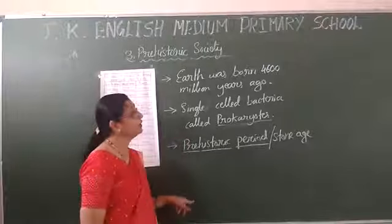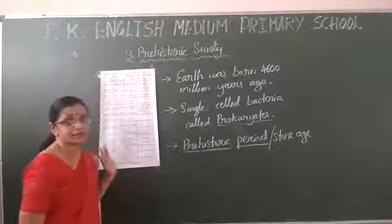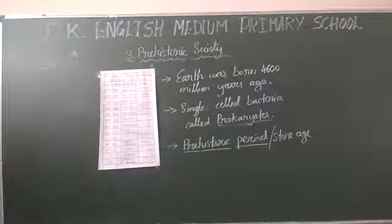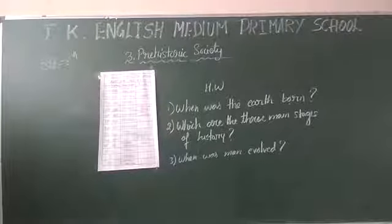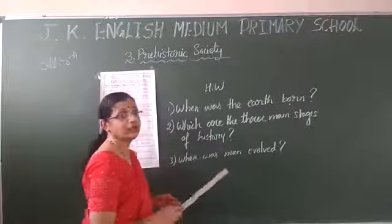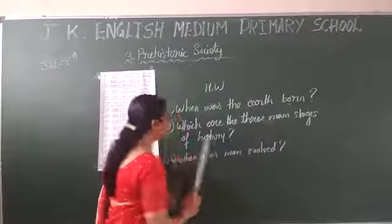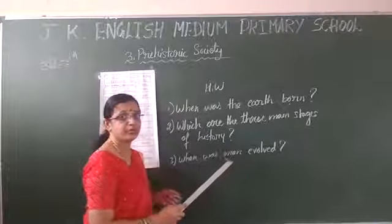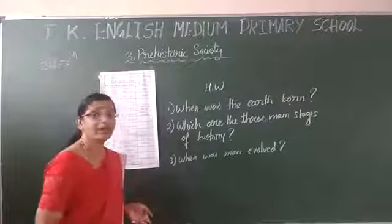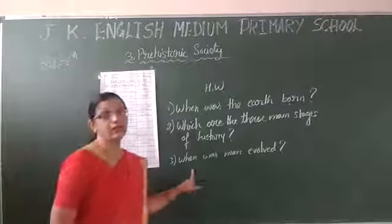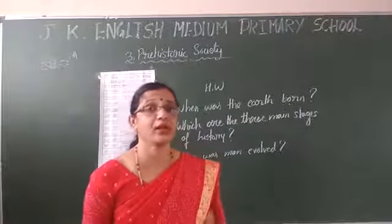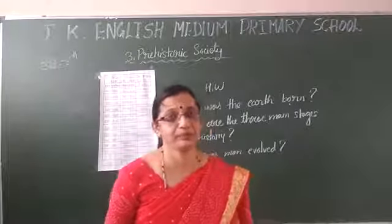For today's session, take down the homework. The questions are: when was the earth born — how many million years ago? Which are the three main stages of history? When was man first evolved — 1.8 million years ago. Enough for today. Next class I am going to explain the prehistoric period and its three parts. Thank you.